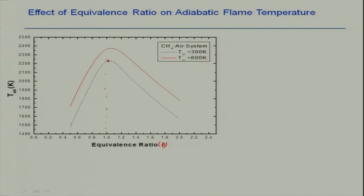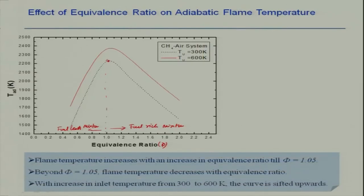On the lean side, the temperature drops down on both sides, but the drop on the lean side has a steeper slope and it is shallower on the rich side compared to the lean side. Keep in mind that the highest flame temperature for hydrocarbons is generally obtained around phi equal to 1.05 — sometimes 1.03 or 1.04, but approximately 1.05.